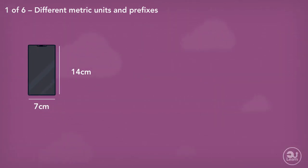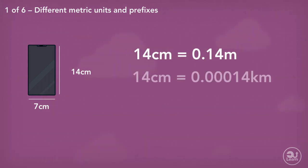14 centimeters in meters is 0.14 meters. 14 centimeters in kilometers is 0.00014 kilometers. 14 centimeters is a more reasonable way of showing that length than the other two. We could also say 140 millimeters.